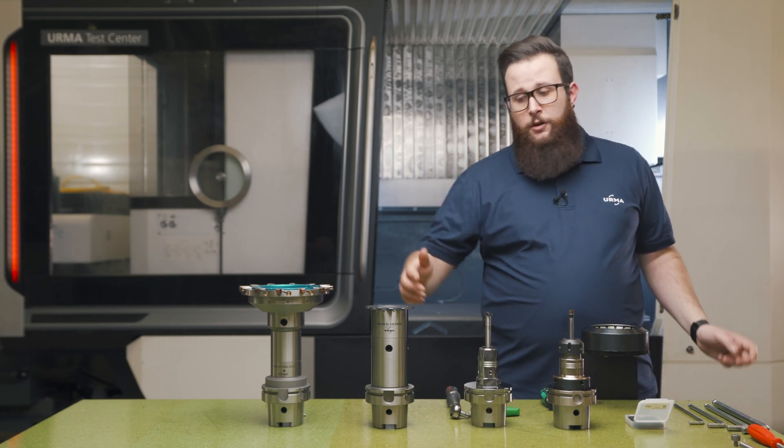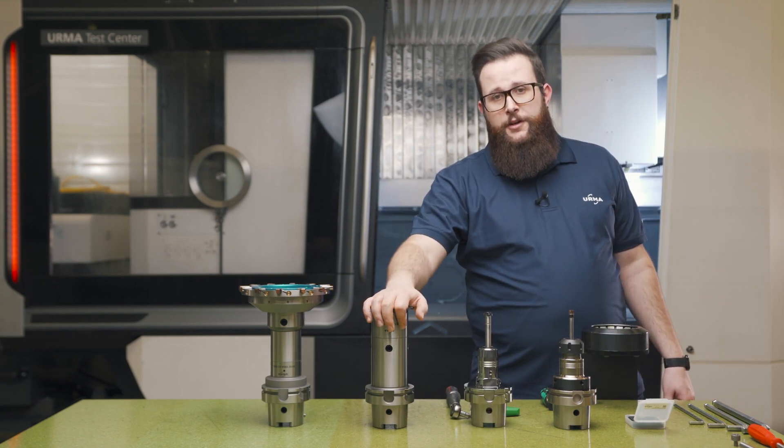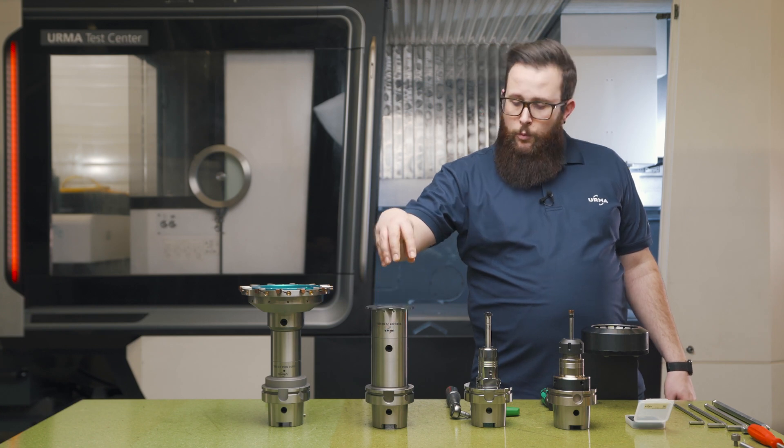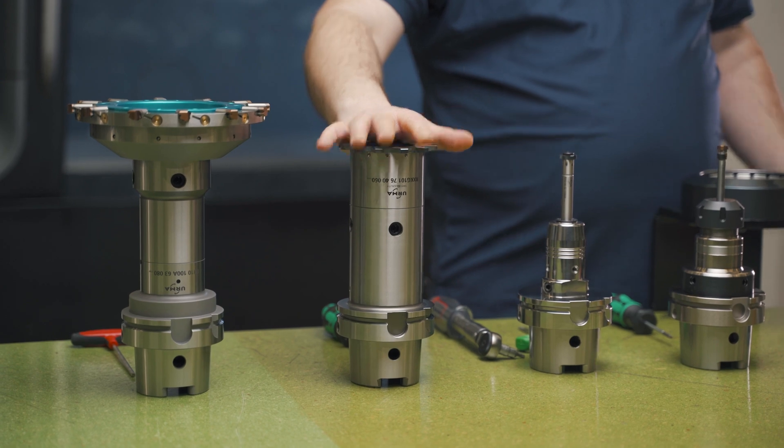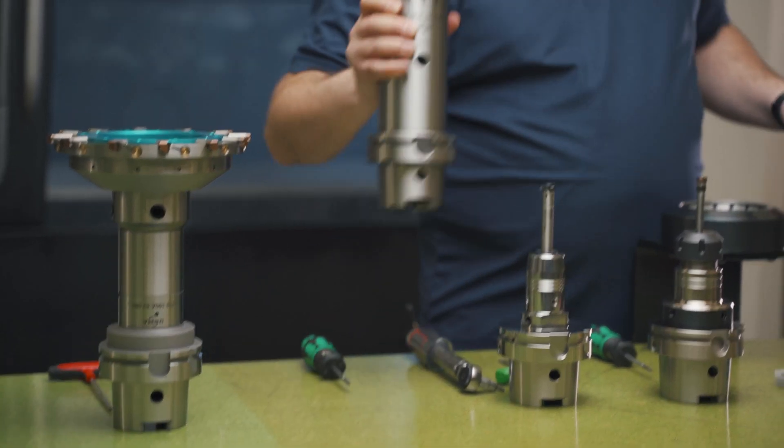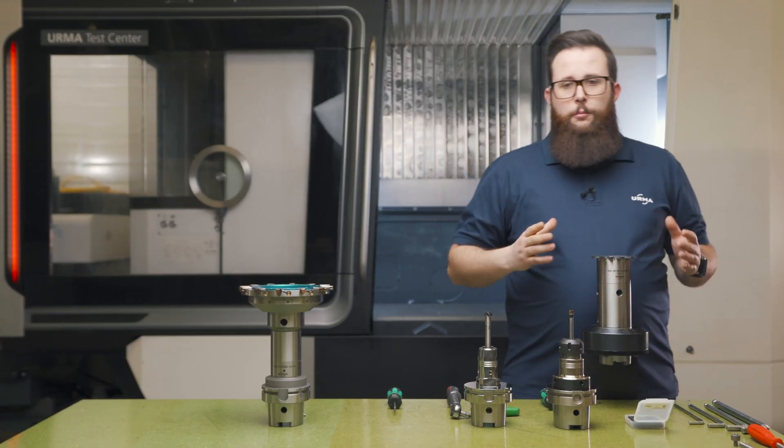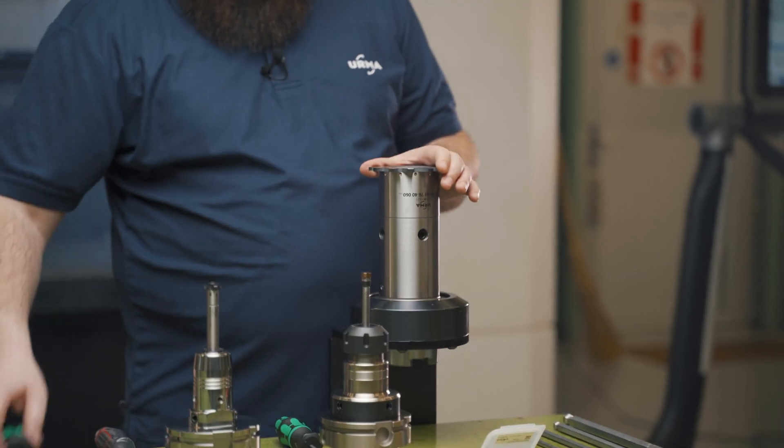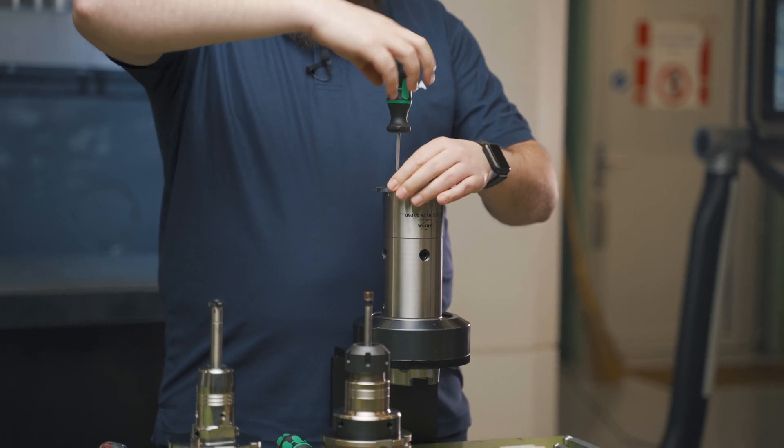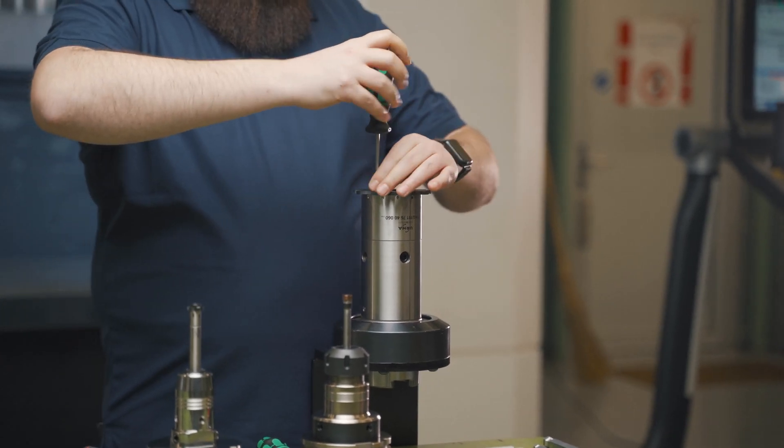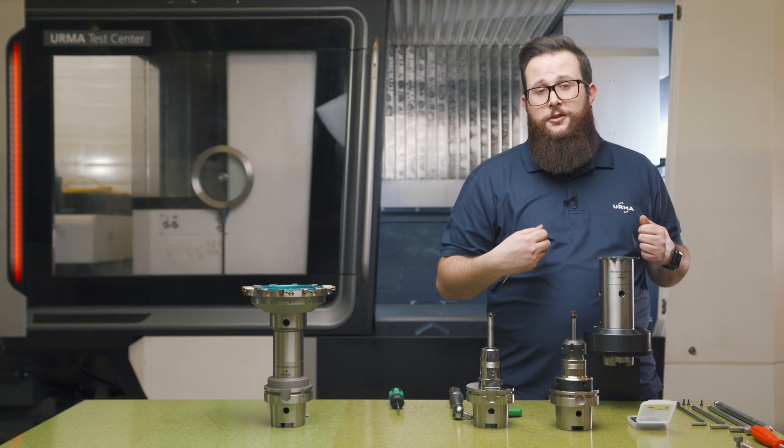And on the bigger sizes, on the RX medium, from 36 millimeter up, we don't have cylindrical shanks anymore. We use a modular system, but it's the same deal. Put it into your tool holder, take your screwdriver, untie your screws, and simply take your insert off.